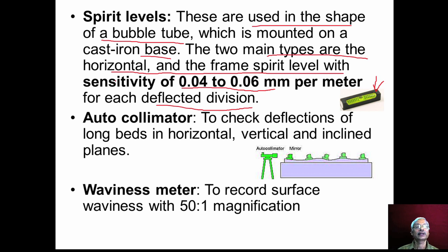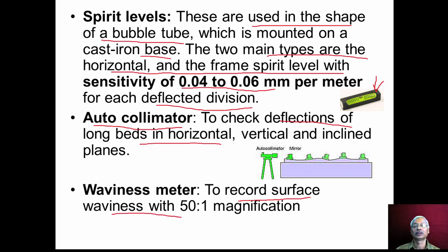Another important instrument used is the auto collimator, which is used to check the deflections of long beds in horizontal, vertical and inclined planes. We can check the deflection of guideways using the auto collimator. Waviness meters are also used to record the surface waviness of the beds and tables with a magnification of 50 to 1.